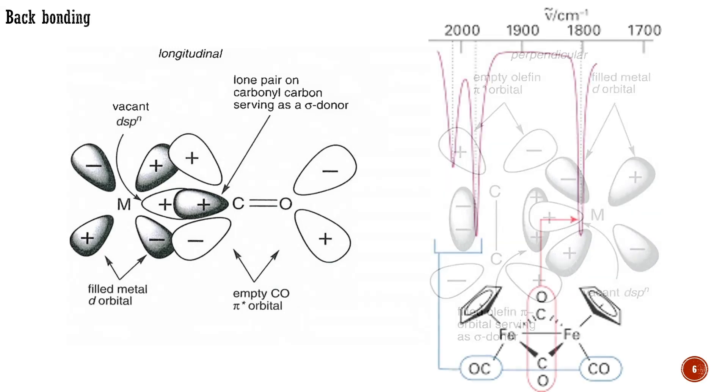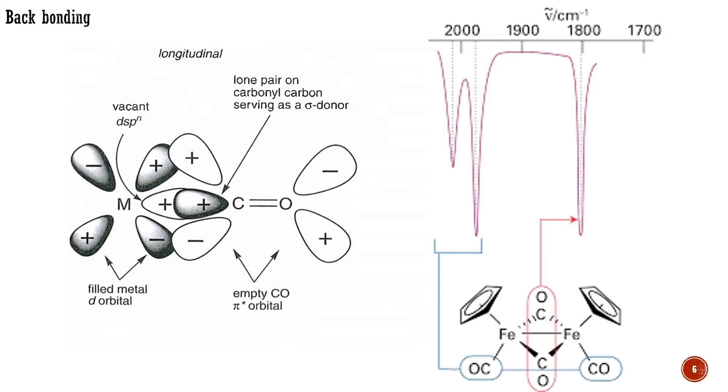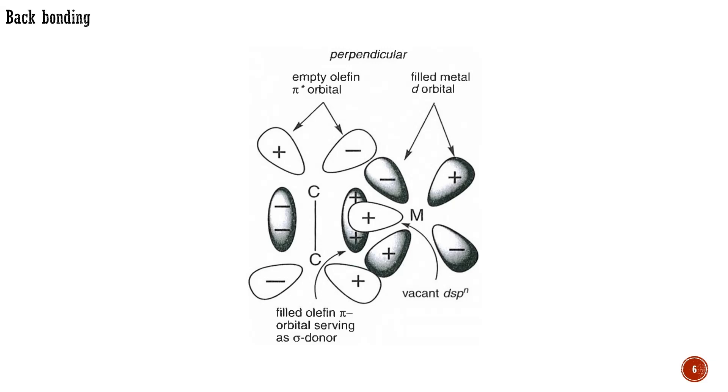There is ample physical evidence for π-back bonding with good π-acceptor ligands. Carbon monoxide, which always acts as an acceptor, experiences a lengthening of the carbon-oxygen bond and a decrease in carbon-oxygen stretching frequency in the infrared spectrum upon complexation. This is a good indication of the population of a π-antibonding orbital on carbon monoxide, decreasing the carbon-oxygen bond order.